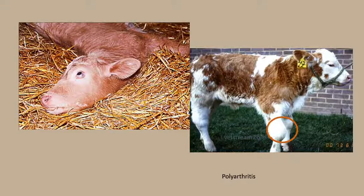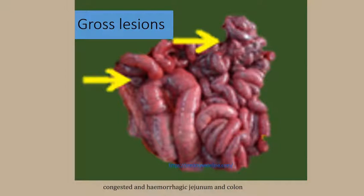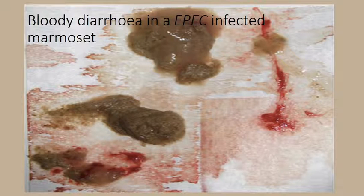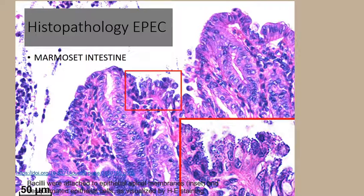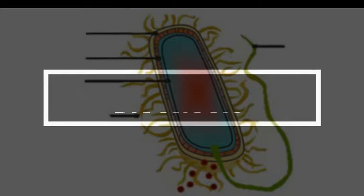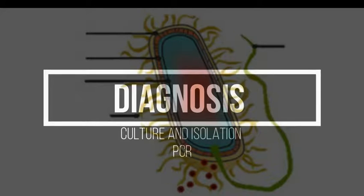Regarding the lesions, you may not find much gross lesion in the intestine in all cases. In some cases, you may find hemorrhage in the intestinal mucosa. In extreme cases, you may find necrotic enteritis. In an experimental study in marmosets infected with EPEC, hemorrhage was found in the intestine both in the serosa and mucosa, and histologically, adhesion of the bacteria onto the epithelium and colonization on the epithelial surface was observed. Diagnosis can be done using culture, and PCR test targeting genes of enterotoxin can be used if it is a case of toxigenic bacteria.